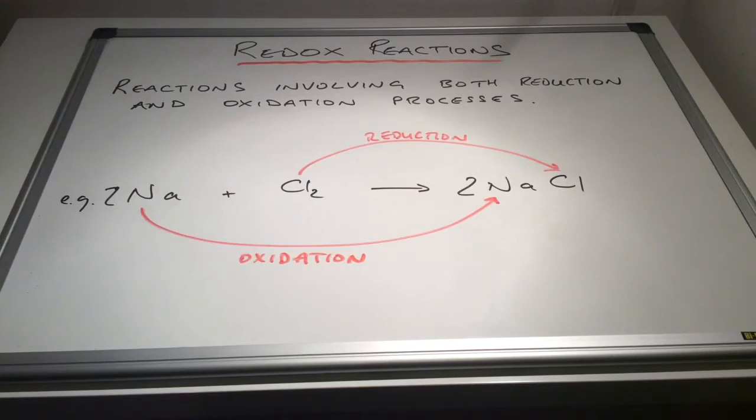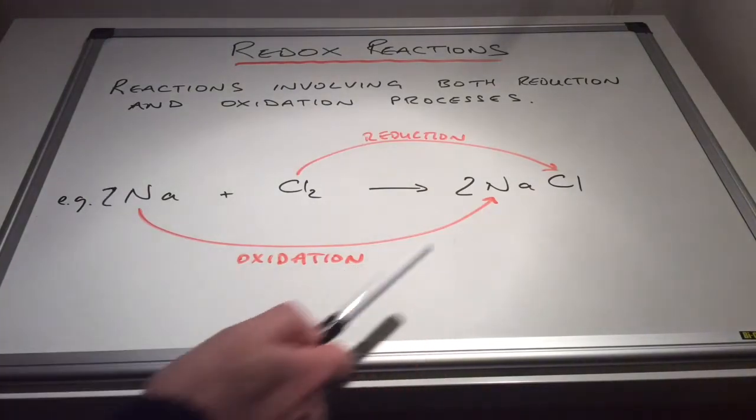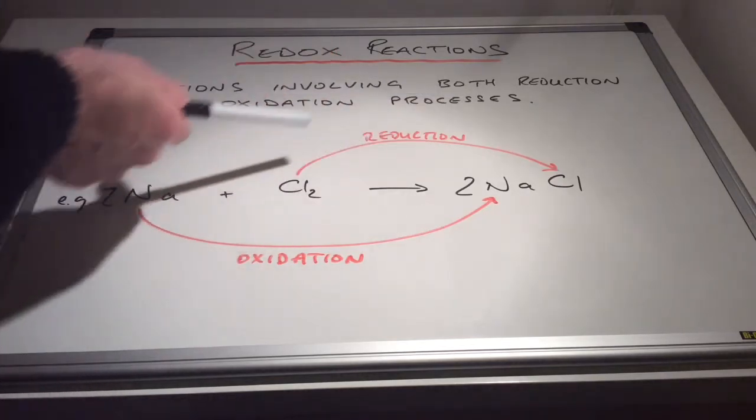And there's an example on the board. We've got the reaction between sodium and chlorine to make sodium chloride, and I've marked up the oxidation process and the reduction process. So what this video is going to do is look at what the electrons are doing and how we can use those to determine why this is the oxidation process and why this is the reduction process.